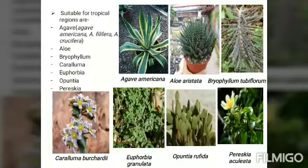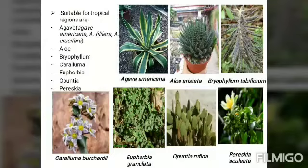The third tropical succulent is bryophyllum, which belongs to the family Crassulaceae. The most important species are Bryophyllum tubiflorum and Bryophyllum daigremontianum — a picture of Bryophyllum tubiflorum is shown. Next is caralluma, belonging to the family Asclepiadaceae. The important species is Caralluma europaea, and a picture is provided.